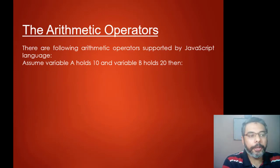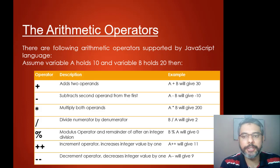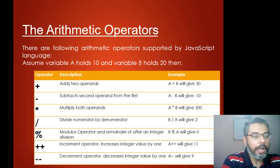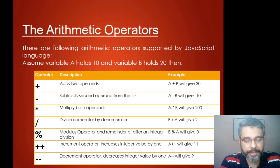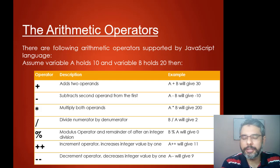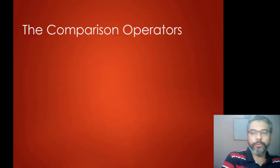Arithmetic operators are operators that perform simple mathematical calculations. These operators are: plus, minus, multiply, divide, percentage (modulus), increment operator with double plus, and double minus which represents the decrement operator. Plus adds two values, minus does subtraction, and so on — these are simple mathematical operators we have been using for a very long time.